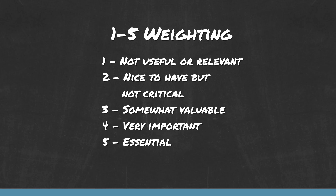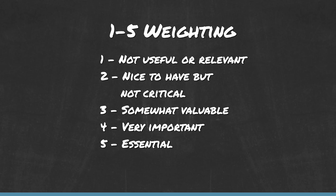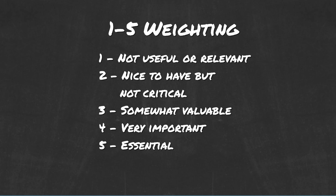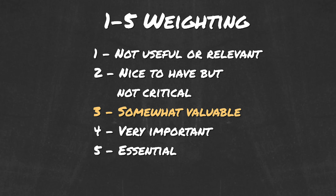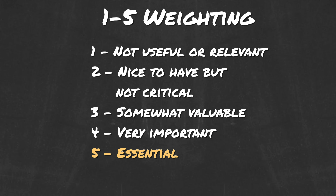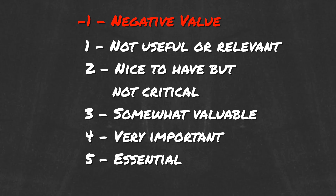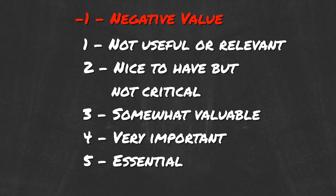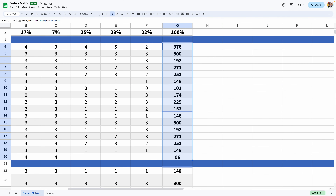This illustration shows an example. In each cell, there are weights from one to five based on how important that feature is for that persona — one is not useful, two is relevant but nice to have, three is somewhat valuable, four is very important, and five is essential. Interestingly, you can even make the decision to allow for negative weights if the feature is of negative value to the persona. In the column where the scores for each feature are weighted, there's a total that sums up the priority for each feature.